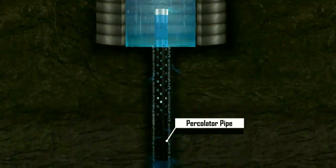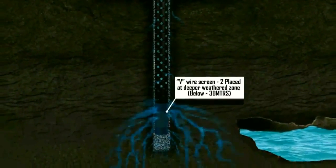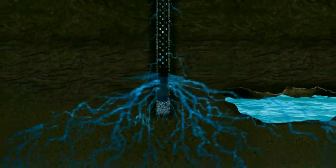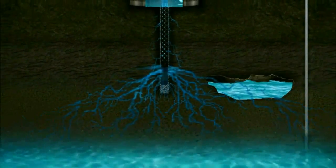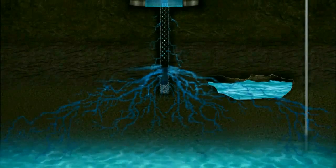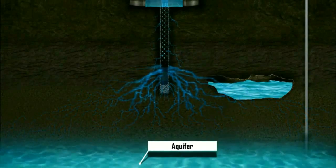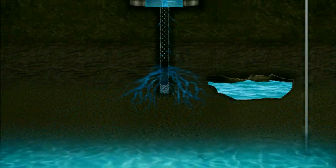The water column and the dual V-wire screen facilitate the filtered rainwater to reach the weathered and permeable zone.